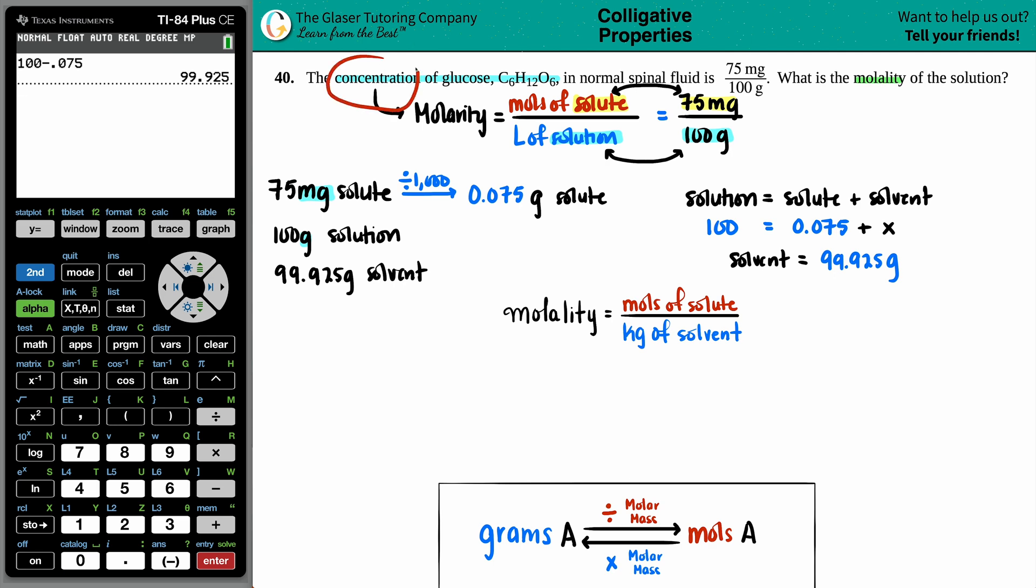If they said that the concentration was glucose, or it was of glucose, your concentration is always stated in terms of the solute, because that's the numerator. So this solute is the C6H12O6.